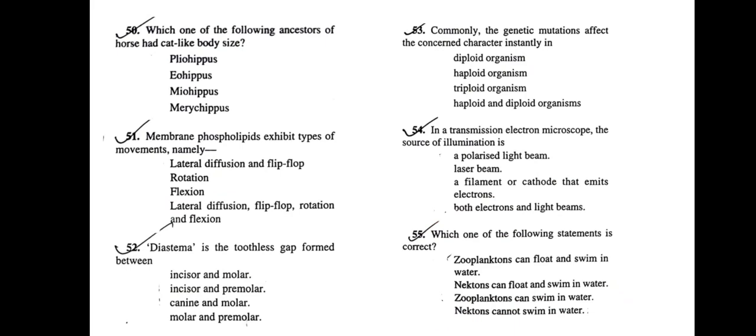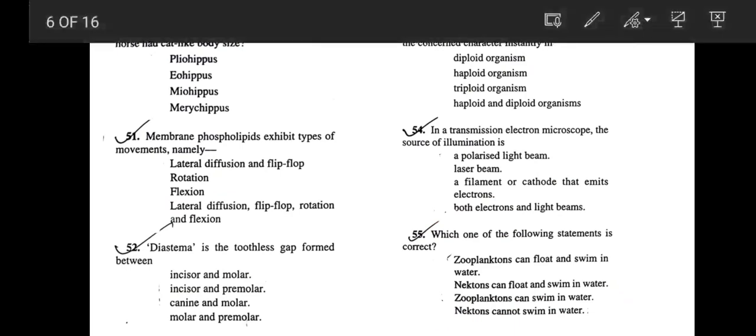Next question: In the rhagonoids, the spongocoel is spacious. You can find a spongocoel like a triangular structure which is spacious. Correct answer would be option D, spacious. Next: Which one of the following ancestors of horse had a cat-like body size? According to evolutionary trend, the earliest horse were the most smallest in size. So obviously, the earliest horse was Eohippus, which has a cat-like body size.